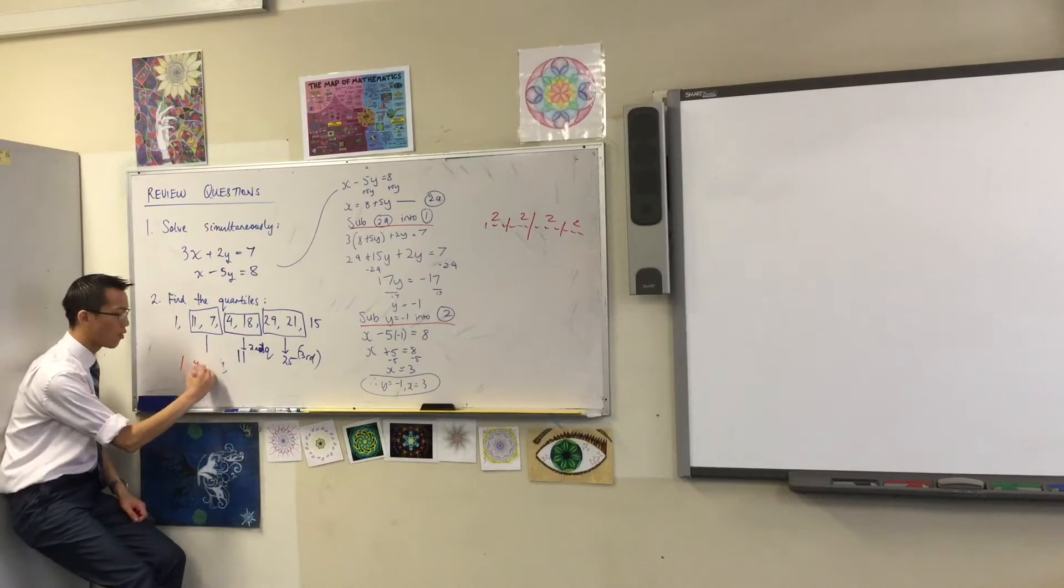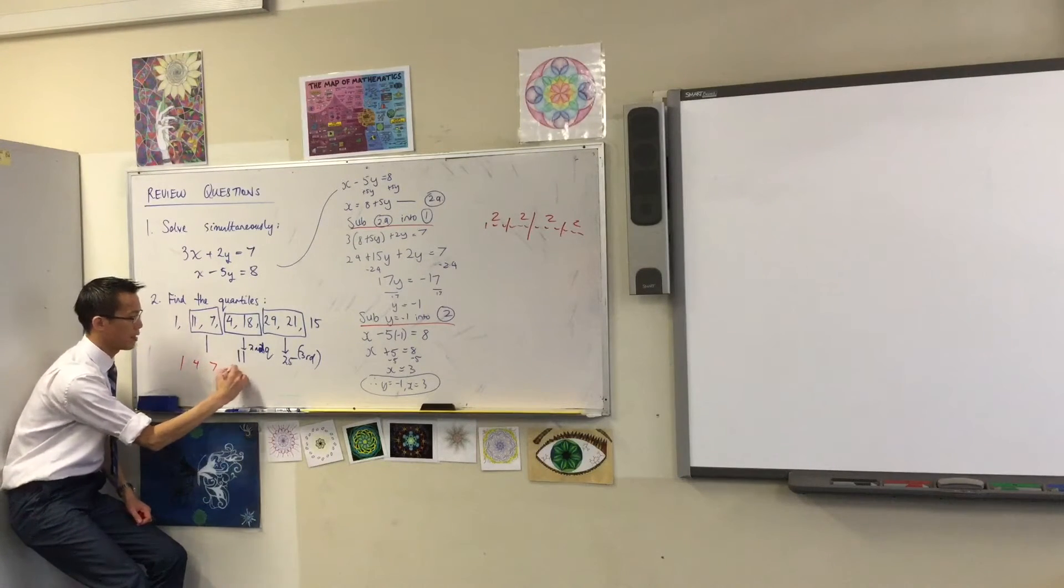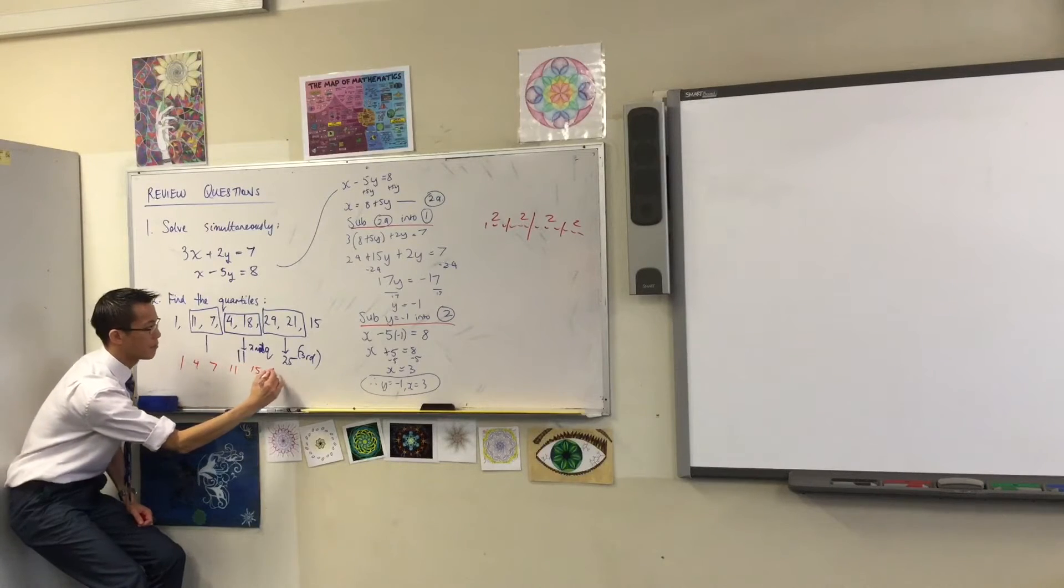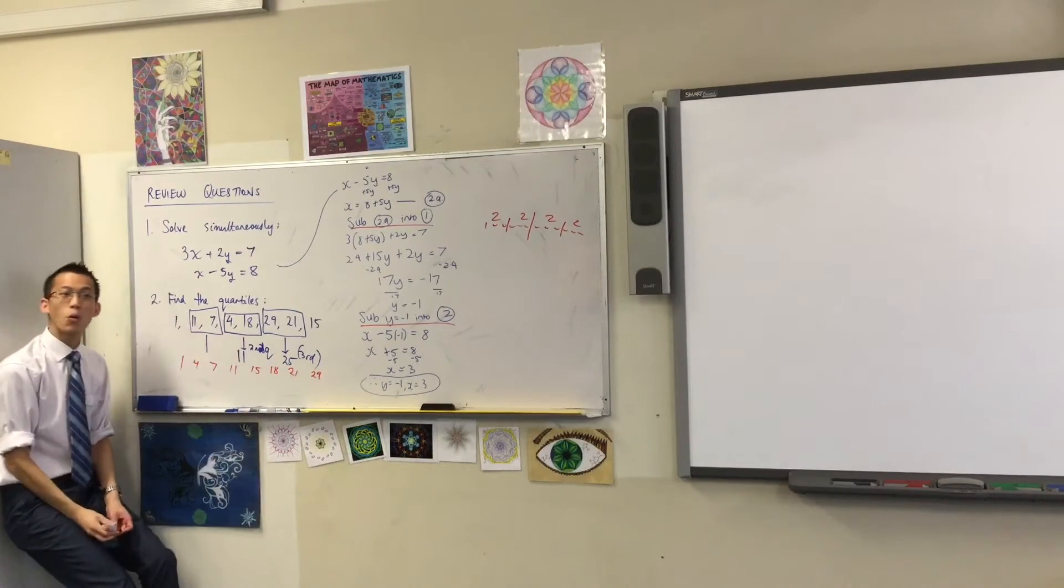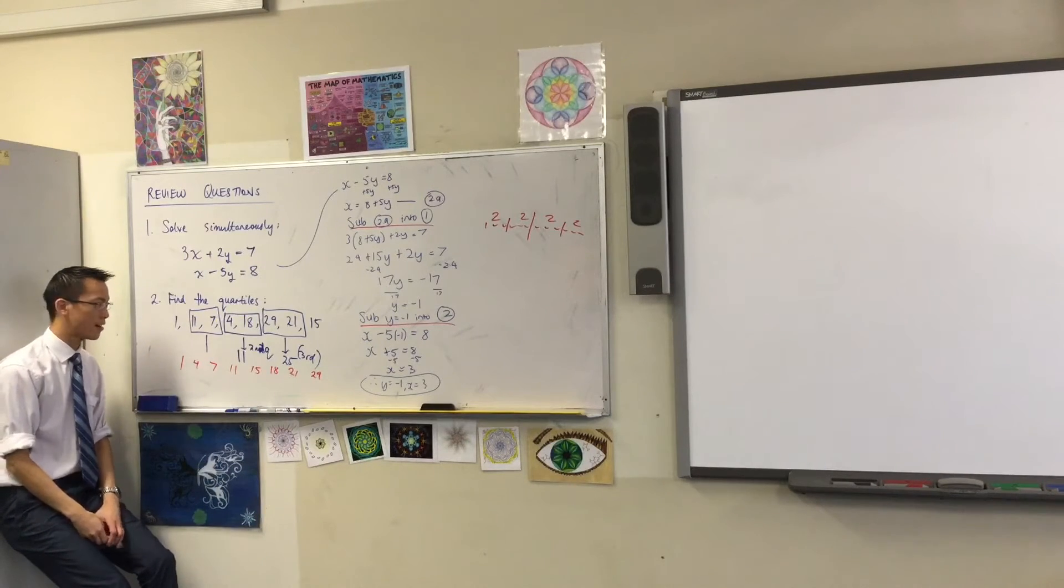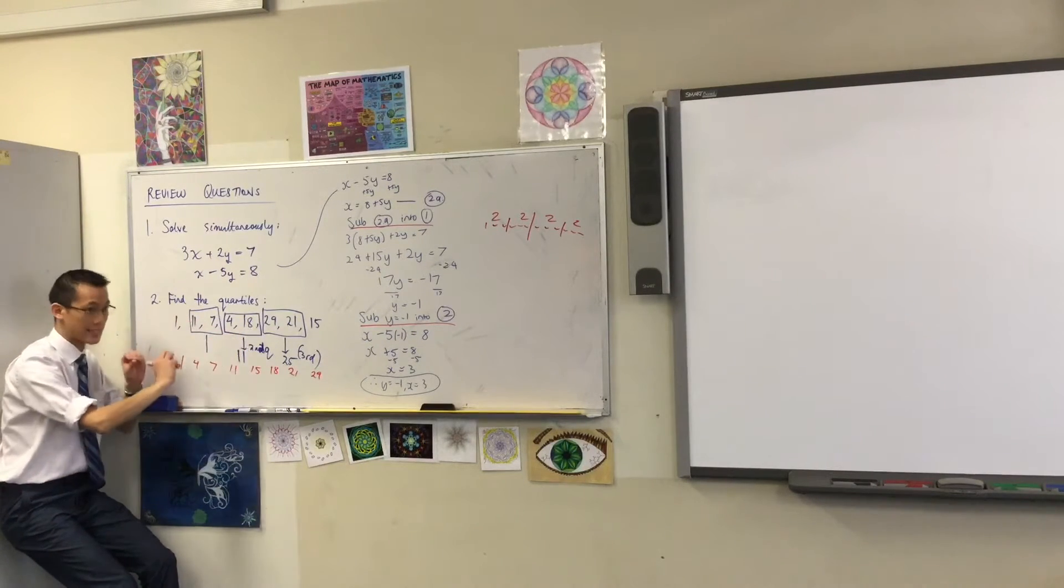So, can someone tell me? They've already ordered theirs. What is the order of the scores? One. One. Four. Seven. Eleven. Fifteen. Eighteen. Twenty-one. Twenty-nine. Cool. So, once you've got the scores in order, you can take the same process, and it's exactly right.